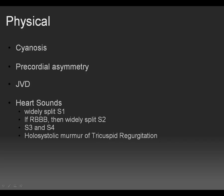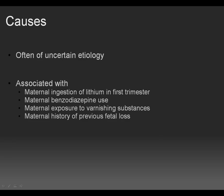On exam, cyanosis is probably the most common and easily recognizable finding. Patients will also have precordial asymmetry, primarily left parasternal prominence. Based on right ventricular heart failure, you will see jugular venous distension. These patients also have multiple different heart sounds, particularly a holosystolic murmur consistent with tricuspid regurgitation, remembering that this murmur will increase with inspiration.